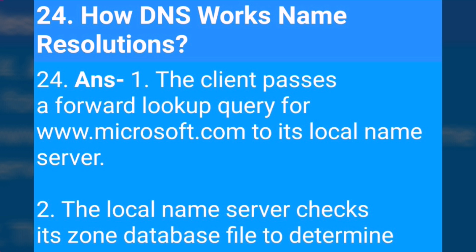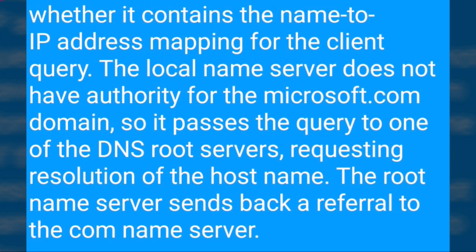How DNS name resolution works: The client passes a forward lookup query for www.microsoft.com to its local name server. The local name server checks its zone database file to determine whether it contains the name-to-IP address mapping for the client query. If the local name server does not have authority for the microsoft.com domain, it passes the query to one of the DNS root servers requesting resolution of the host name.